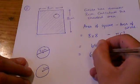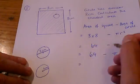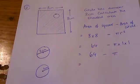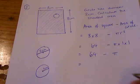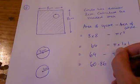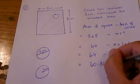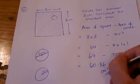So we have 64 minus π. Type that on the calculator, and you get 60.86 to two decimal places. And that is, again, centimeters squared.